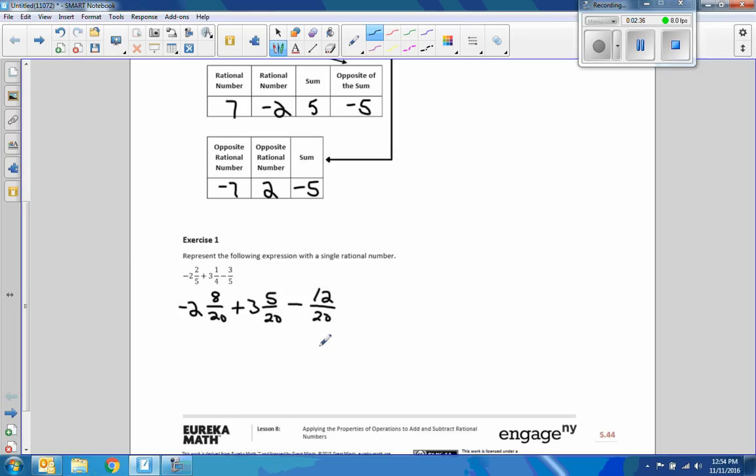Then we can make mixed fractions improper. So 20 times negative 2 is negative 40, and then 8 is negative 48 over 20. Disregard the negative sign until you're done. 20 times 3 is 60 plus 5 is 65. So it's plus 65 over 20 minus 12 over 20.